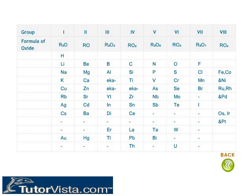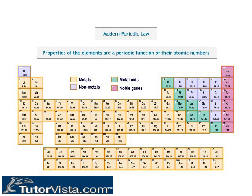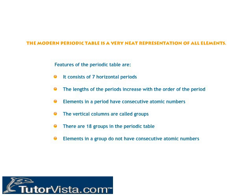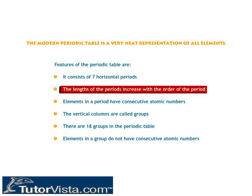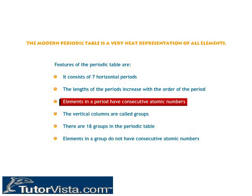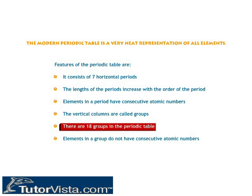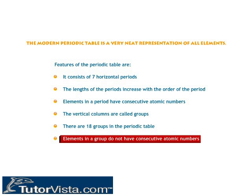The Modern Periodic Law states that the properties of elements are a periodic function of their atomic numbers. The Modern Periodic Table consists of seven horizontal periods, and the lengths of the periods increase with the order of the period. Elements in a period have consecutive atomic numbers. The vertical columns are called groups, and there are 18 groups in the Periodic Table. Elements in a group do not have consecutive atomic numbers.